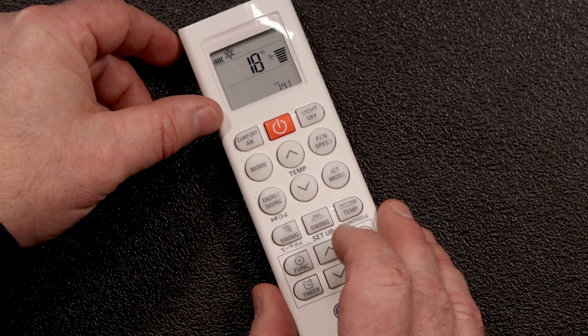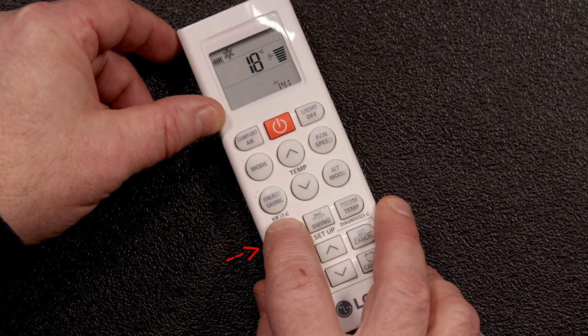To switch back and forth between Celsius and Fahrenheit, press and hold the swing button for 3 seconds.